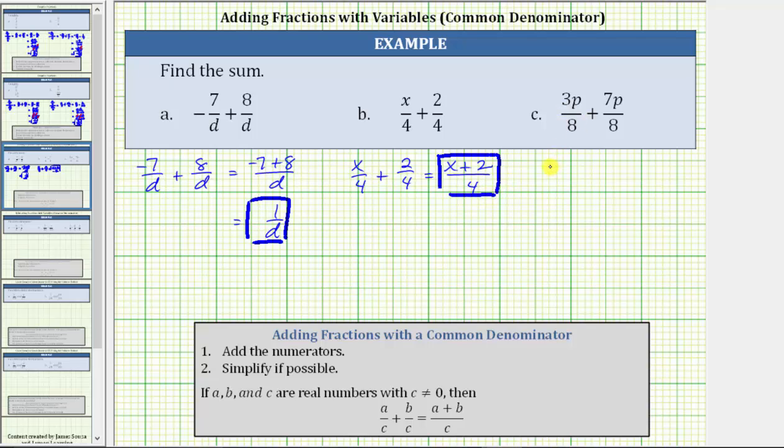For c, we have three p over eight plus seven p over eight. The denominator remains eight. And now we add the numerators, which gives us three p plus seven p. Three p plus seven p is ten p. This gives us ten p over eight.